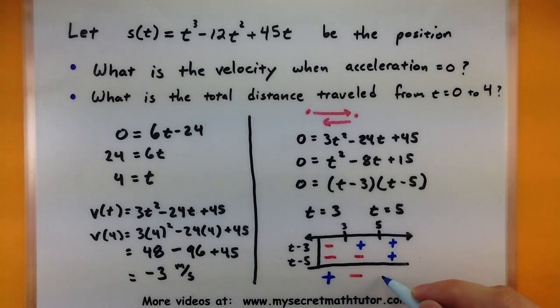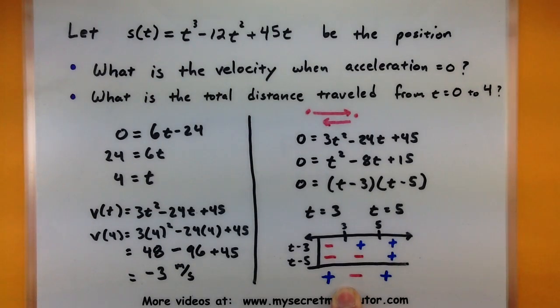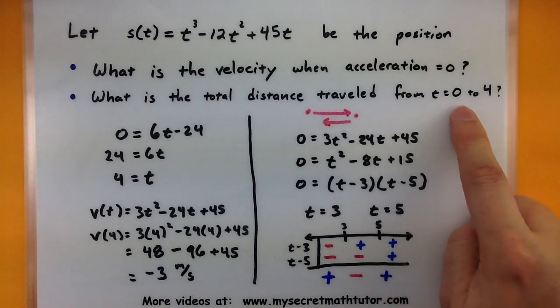On the very end, positive times a positive is another positive. So 5 is another spot where it has changed directions. So here's the really important thing I'm picking out of here. My particle changed direction at 3 and 5. And if I'm really interested at the total distance traveled from 0 to 4, it means I need to break this down into two pieces.